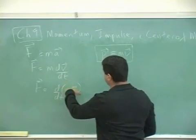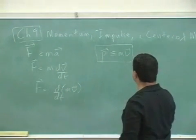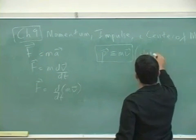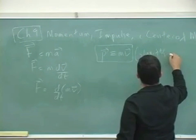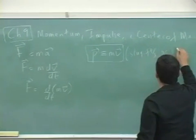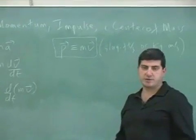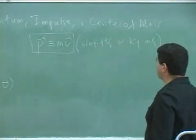Some variable here that we can express as something known as momentum. The units of momentum are units of mass would be slug times the unit of v would be feet per second. And in the metric unit system, it would be kilogram meter per second. And it has no abbreviation. It's just kilogram meter per second.